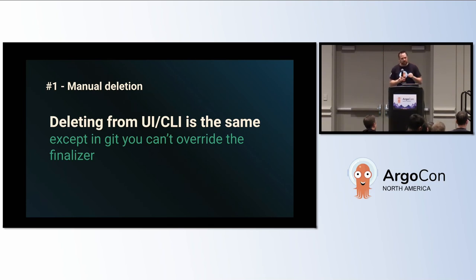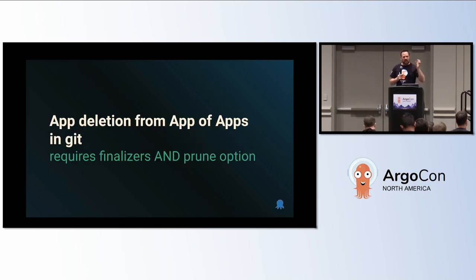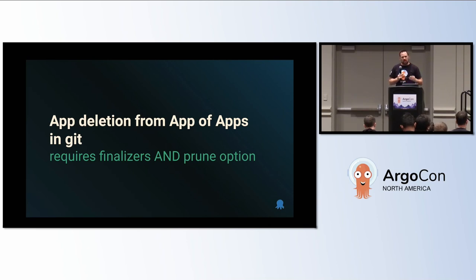On manual deletion: if you're deleting things from the UI and CLI, it is the same as deleting them in Git. If you're using app of apps with prune enabled, the difference is that in Git you cannot override the finalizer — in the UI you can override it and decide whether to keep resources or not. App deletion from app of apps in Git requires both finalizers and the prune option to be set.